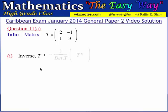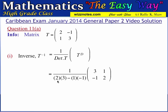The inverse of the matrix T is given as 1 divided by the determinant of T multiplied by the adjoint of T. We need to calculate the determinant of T and set up the adjoint matrix. The determinant of T equals 2 times 3 minus 1 times minus 1 — that is the product of the leading diagonal minus the product of the trailing diagonal. The elements on the leading diagonal are 2 and 3, and on the trailing diagonal are 1 and negative 1.